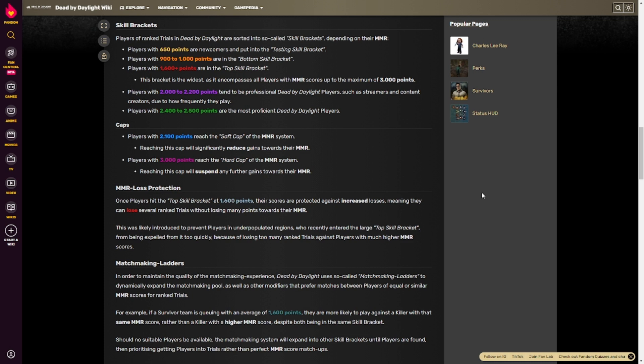This is the Dead by Daylight wiki. These are the skill brackets. From what I understand, these are taken from actual data-mined sets of information that people have found from the game files. So this is factual information as to what is happening when the game is trying to assess your skill. The points of interest are 650, which is where newcomers go, where they are put into a testing skill bracket to see how good they are.